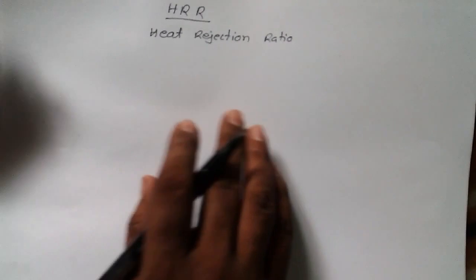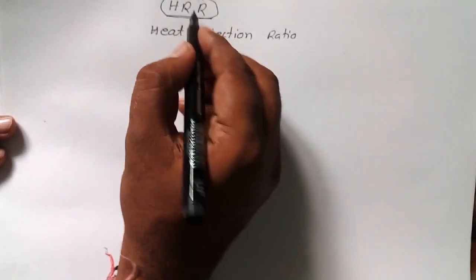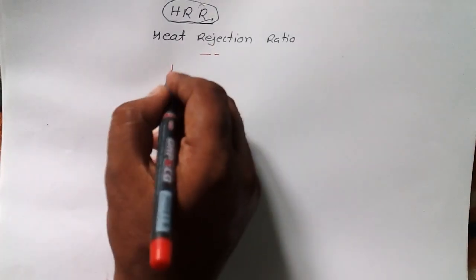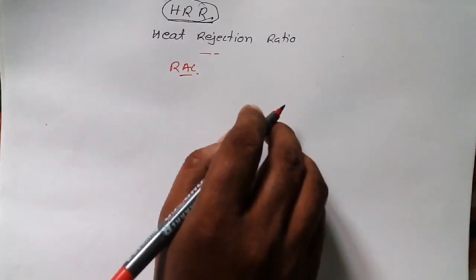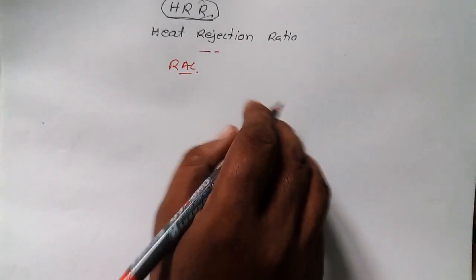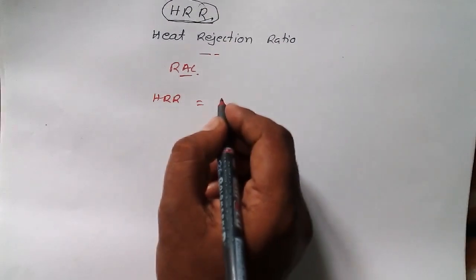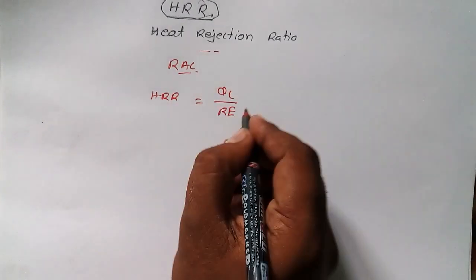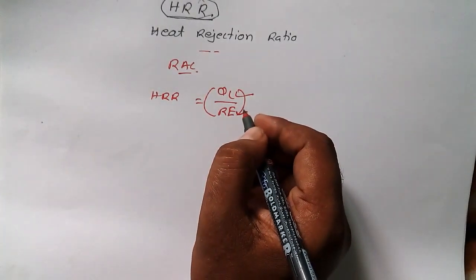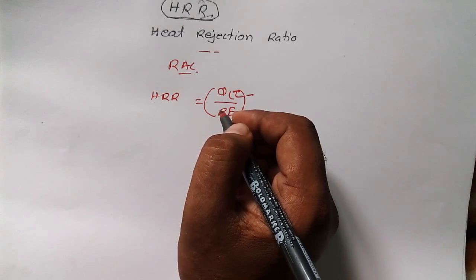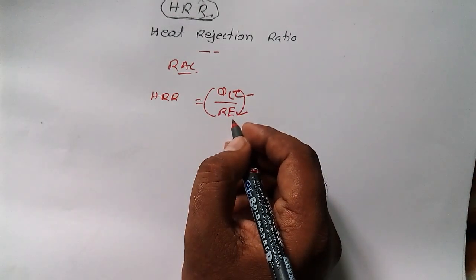Hello, this is Ujjal Kumar Sen. Today we're going to talk about Heat Rejection Ratio, known in short as HRR. This is a topic of RAC — Refrigeration and Air Conditioning. The formula for HRR is: HRR = Qc / RE, where Qc is the heat rejected across the condenser and RE is the refrigerant effect.